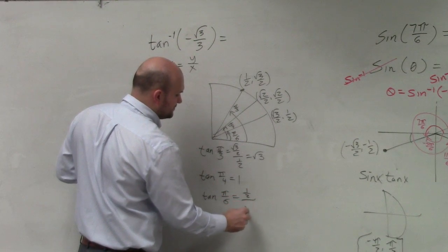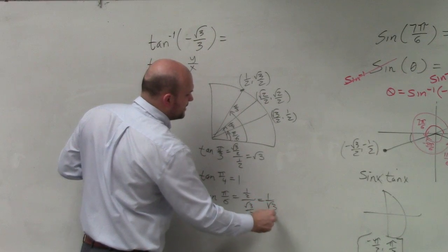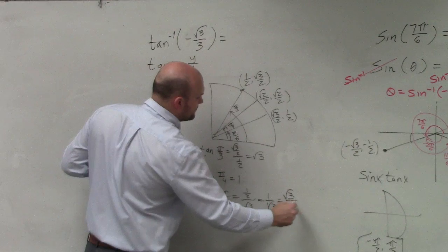But let me just show you real quick. Square root of 3 over 2, the 2 is divided out. You're left with 1 over square root of 3. Rationalize the denominator, square root of 3 over 3.